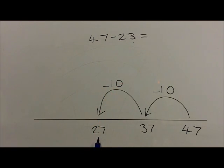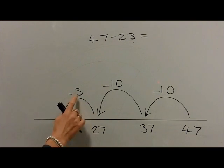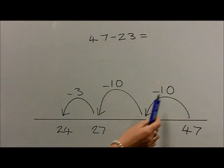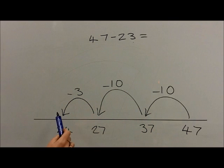So because they've reached 27 after subtracting 20, they then subtract 3 units in one jump. So 27 take 3 gets them to 24. So 47 take 10, 20, then 3 gets them to 24.